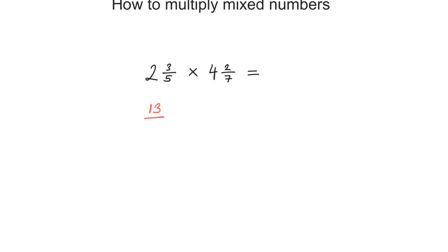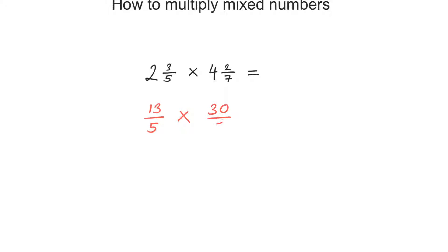The denominator will be just whatever denominator you have there. The denominator there is 5, so the denominator here will be 5. And then the same thing for the other one: 4 times 7 is 28, plus 2 is 30, so that becomes 30 over 7.